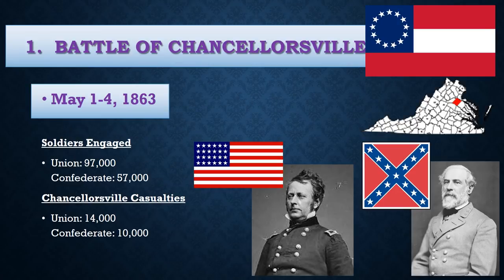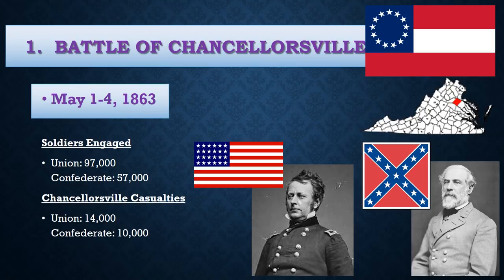Let's begin with the Battle of Chancellorsville. The Battle of Chancellorsville took place in the state of Virginia in May of 1863. It was a huge Confederate victory, which may surprise you because the Confederate troops were greatly outnumbered compared with the Union soldiers — 97,000 to 57,000. The Union general was General Joseph Hooker, whom Abraham Lincoln put in charge after he fired Burnside. The Confederate general was of course Robert E. Lee.